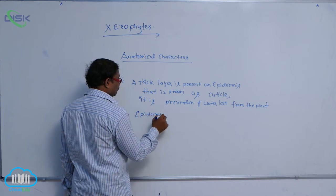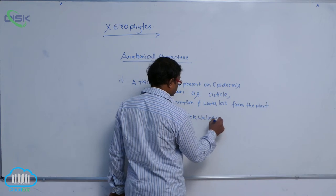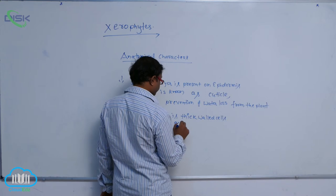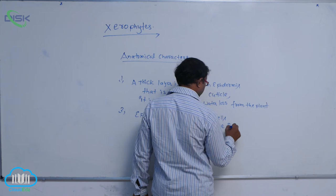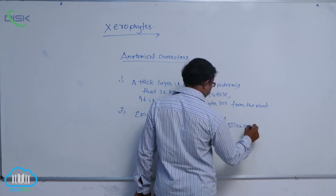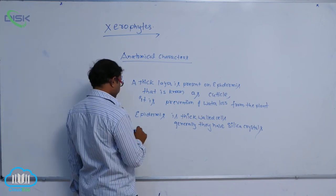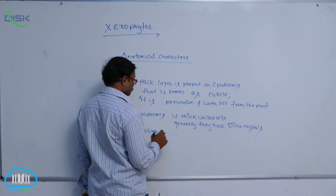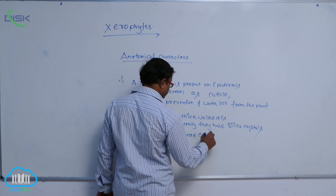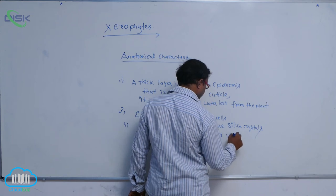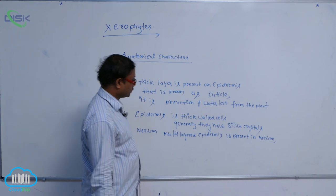The epidermis has thick wall cells. Generally, they have silica crystals. Due to the presence of silica crystals, the leaf surface appears rough. In the nerium plant, multilayer epidermis is present.